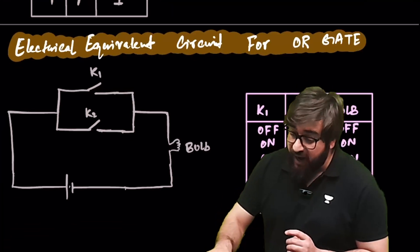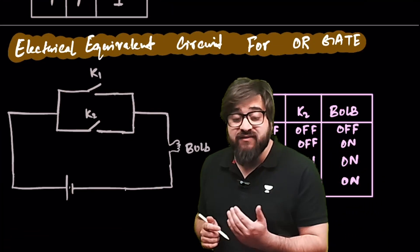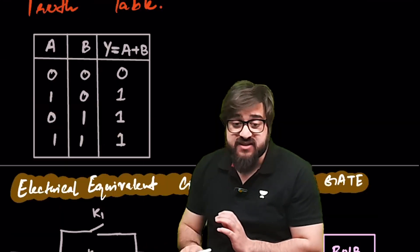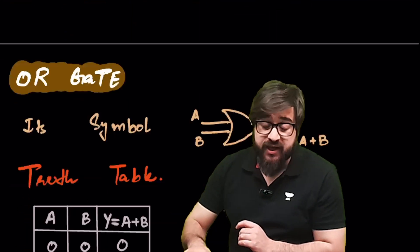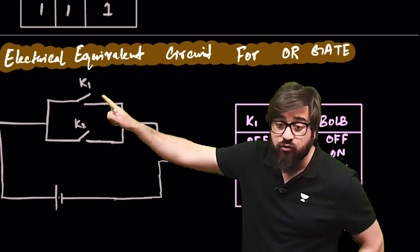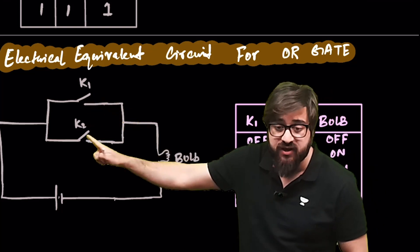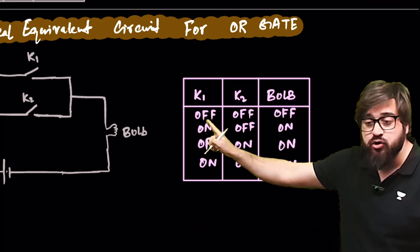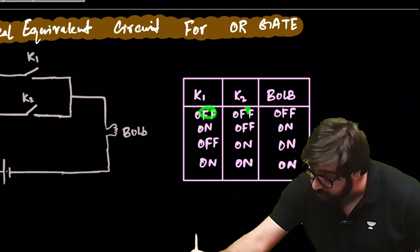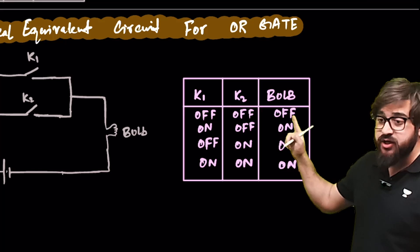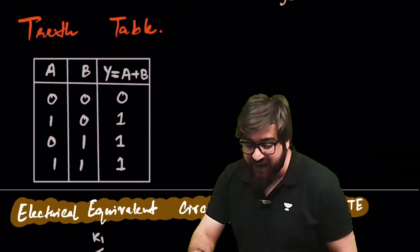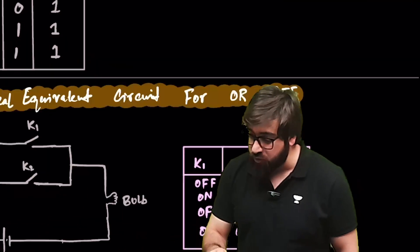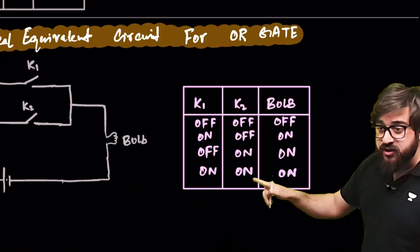The electrical equivalent circuit of the OR gate has two switches — key 1 and key 2 — connected in parallel, with a bulb. If key 1 is off (0) and key 2 is off (0), output is 0 — the bulb remains off. You can check all the other input combinations to verify the truth table.